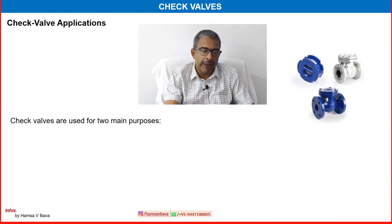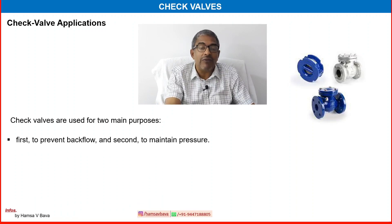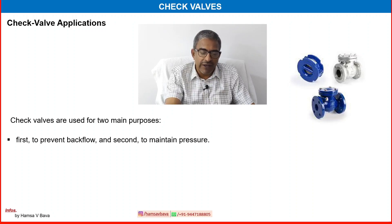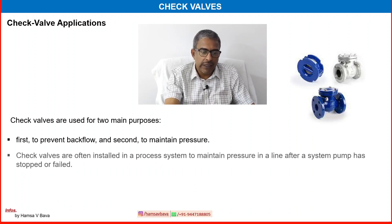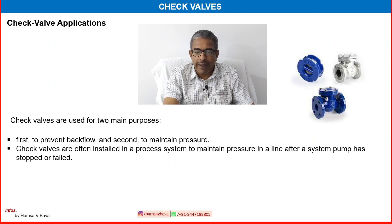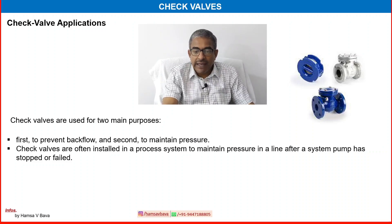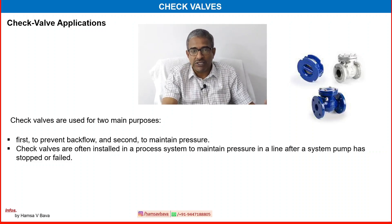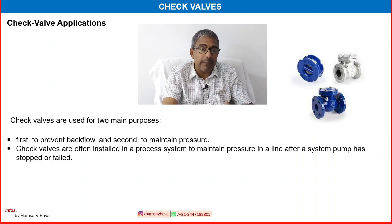Check valves are used for two main purposes: first, to prevent backflow, and second, to maintain pressure. Check valves are often installed in a process system to maintain pressure in a line after a system pump has stopped or failed. So in a case where the pump is stopped or the process is suddenly stopped, check valves are used to maintain pressure in the system and prevent backflow.